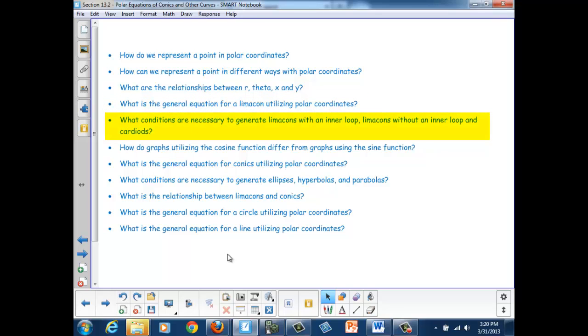What conditions are necessary to generate limaçons with an inner loop, limaçons without an inner loop, and cardioids? How do graphs utilizing the cosine function differ from graphs using the sine function?